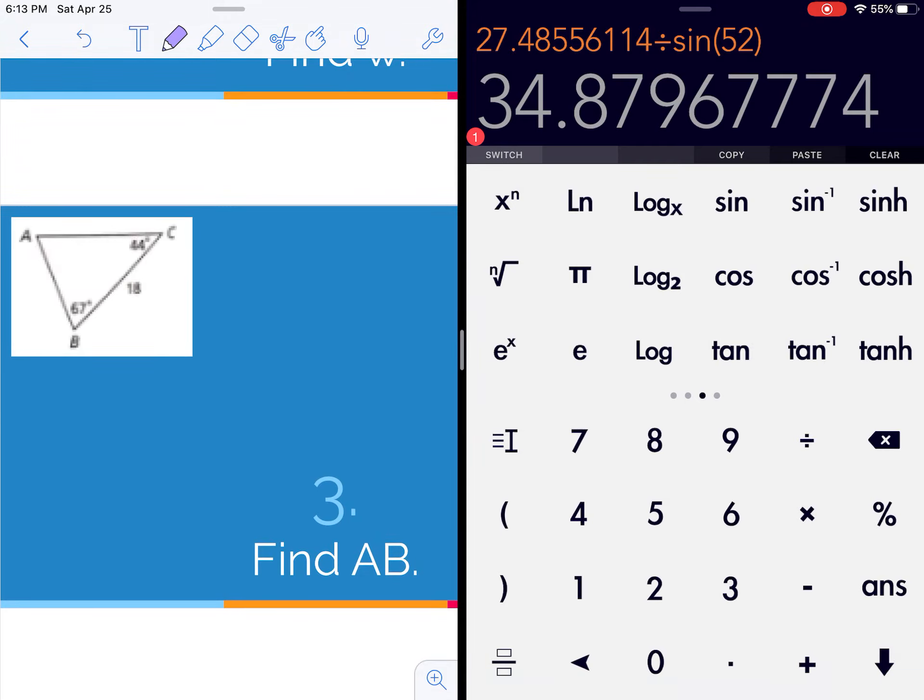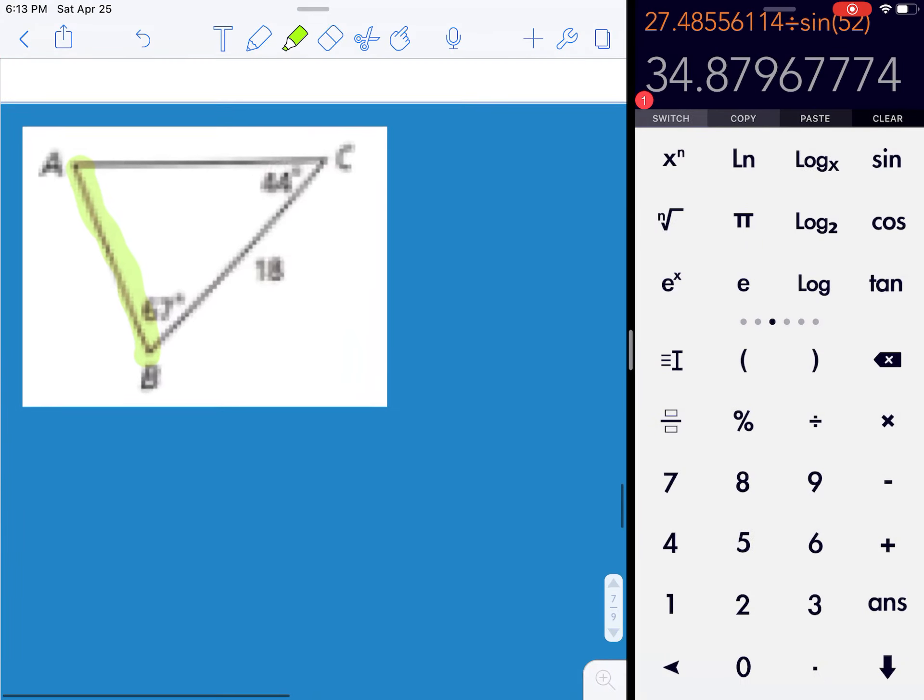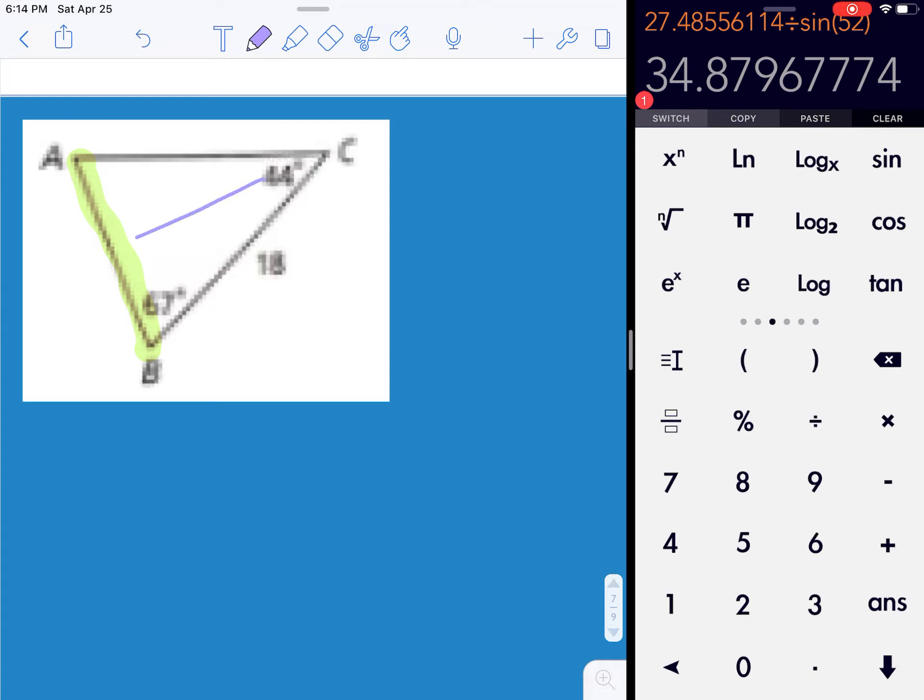A couple more. This time we're asked to find AB. AB is this side. So I know I'm going to use sine of 44 over X. But I can't use this measure over the 18. And we're going to call this 63. I know it's a really low quality scan.